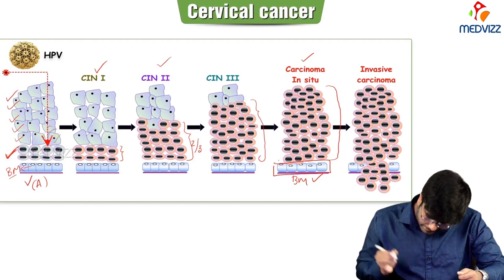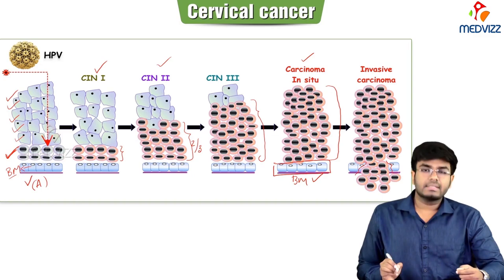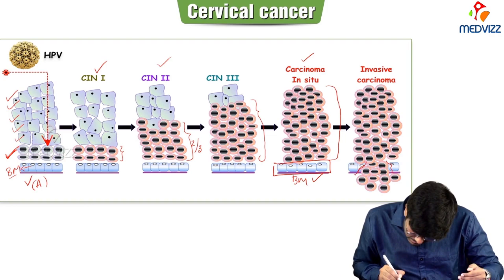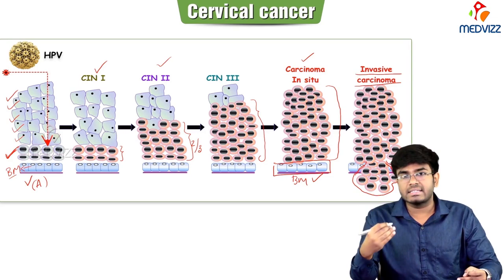In cancer, there is a breach in the basement membrane — once the basement membrane is broken, the dysplastic cells are coming out. This stage is invasive carcinoma — cervical cancer is now getting started. The reason for these dysplastic changes is infection with HPV. The HPV — human papillomavirus — is going to affect the basal epithelial cells, and that HPV will lead to dysplastic changes.